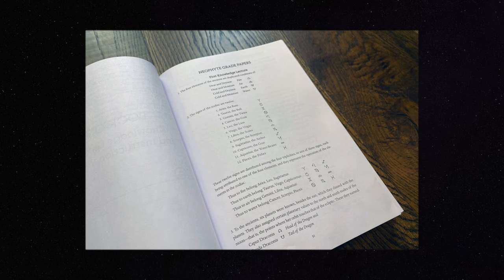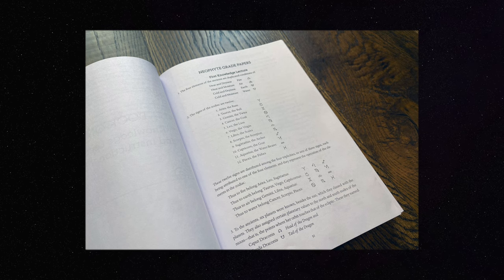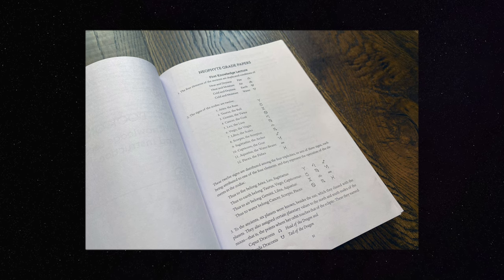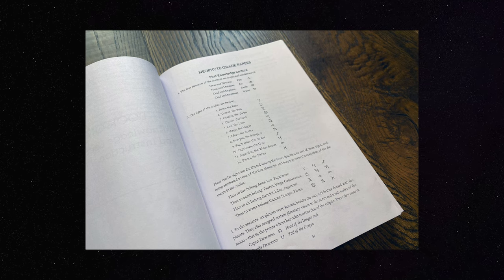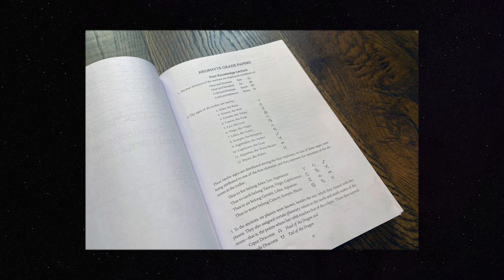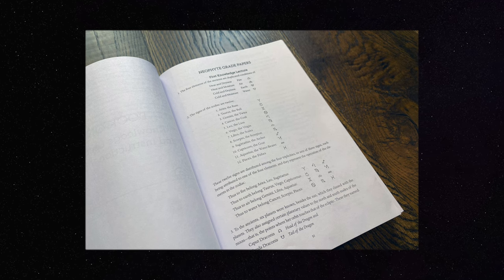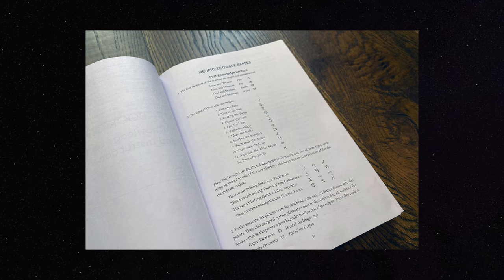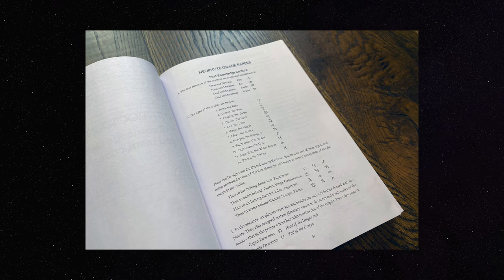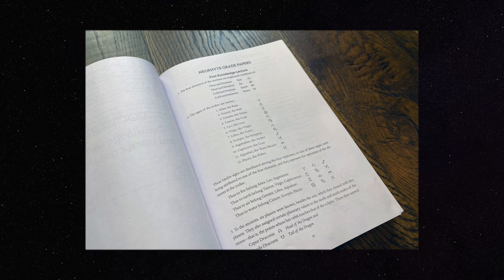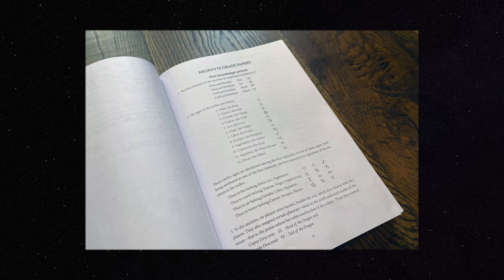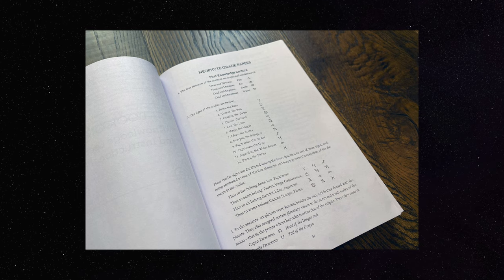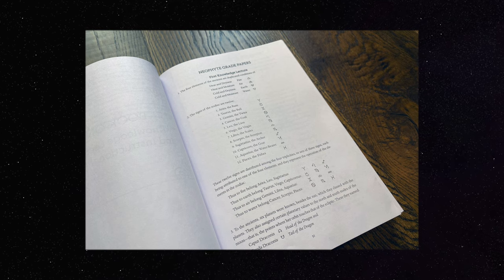The twelve signs are distributed among the four triplicities, or sets of three signs, each being attributed to one of the four elements, and they represent the operation of the elements in the zodiac. Thus to fire belong Aries, Leo, Sagittarius. To earth belong Taurus, Virgo, Capricornus. To air belong Gemini, Libra, Aquarius. To water belong Cancer, Scorpio, Pisces.